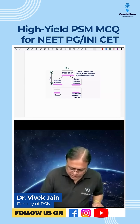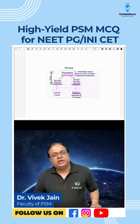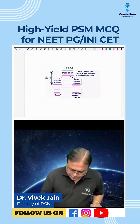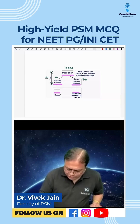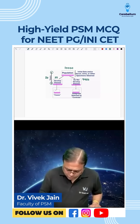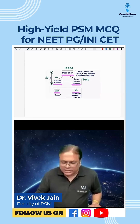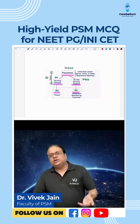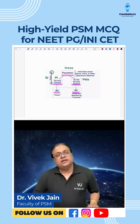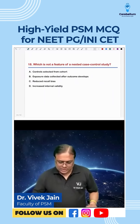Suppose you started with 10,000 healthy people today. After 20 years, 50 develop disease, so 9,950 are healthy. All 50 become cases, and you can select 50 or ideally 200 controls from the remaining healthy individuals. Then you go back in time and compare. This is a nested case control study.